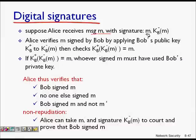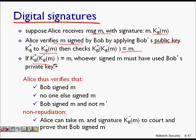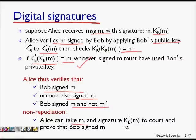To summarize: Alice receives message m with signature kb minus of m. She verifies by applying Bob's public key kb plus to kb minus of m and checks that she gets message m. This confirms it is from Bob. It is non-reputable because only Bob's public key decrypts it correctly. Alice can take m and the signature kb minus of m and prove to anyone that it is Bob who signed the message — and that Bob signed m, not some other message m dash.